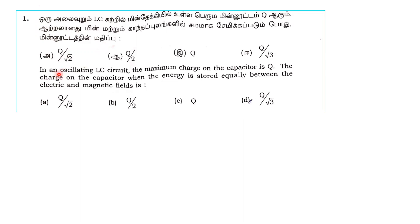First question: in an oscillating LC circuit, the maximum charge on the capacitor is Q. The charge on the capacitor when the energy is stored equally between the electric and magnetic field is?